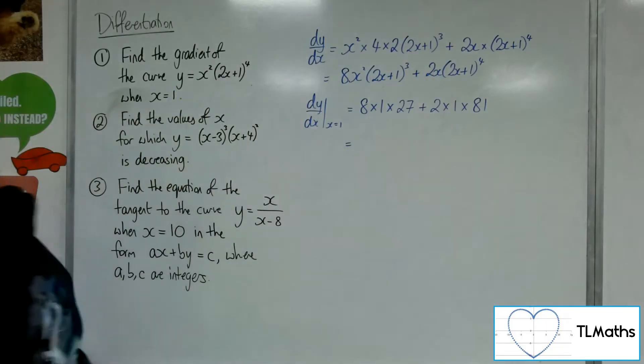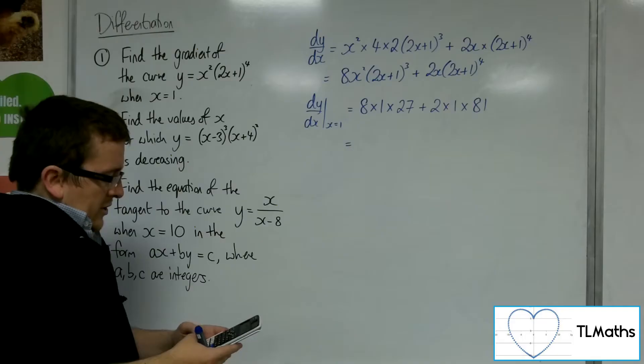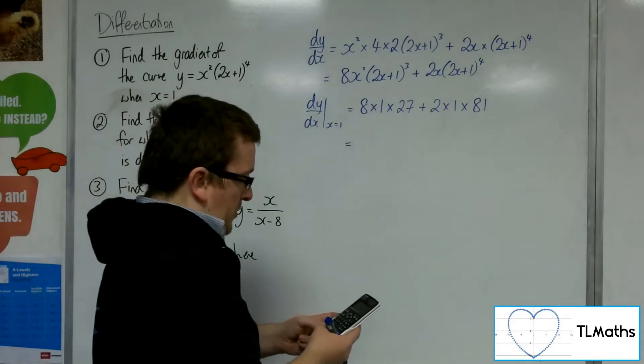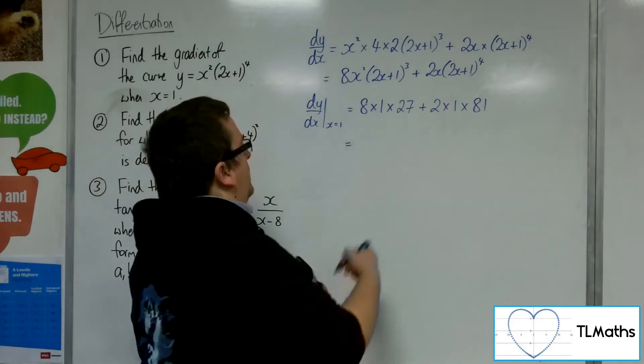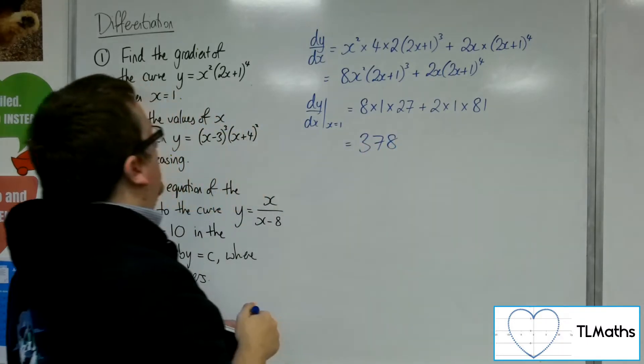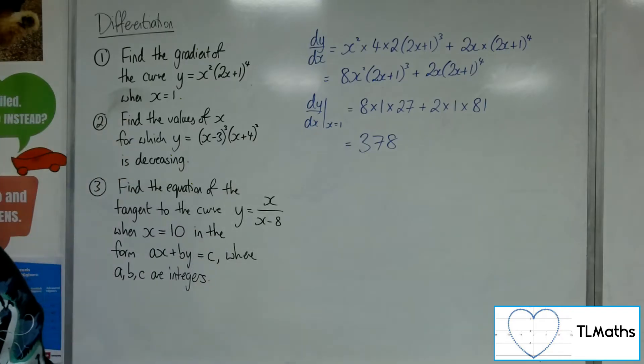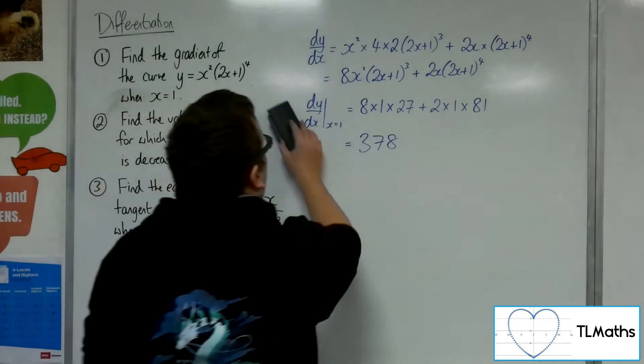So I'm going to avoid doing that in my head. So 8 times 27 plus 2 lots of 81 gets me 378. So that's the gradient of the curve when x equals 1. So that's number one.